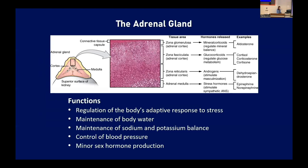When we look at the gland itself, you have two of them — one on each side, sitting right on top of the kidney, composed of multiple layers. The outermost layer is the cortex, with three distinct layers of hormonal production. The innermost layer, the medulla, is responsible for many of your stress hormones. In general, the gland regulates the body's adaptive response to stress, helps maintain body water, sodium and potassium balance, and with that, control of blood pressure, plus a minor role in sex hormone production.